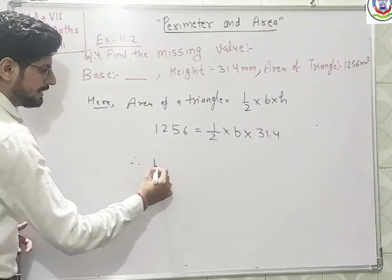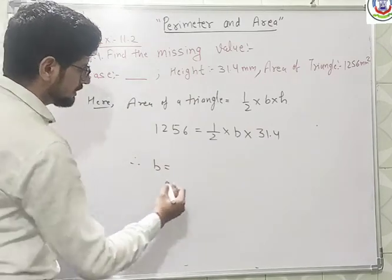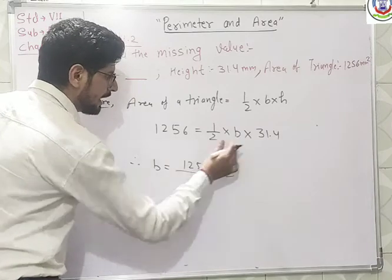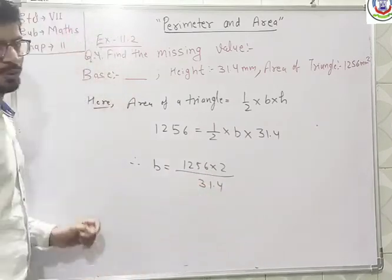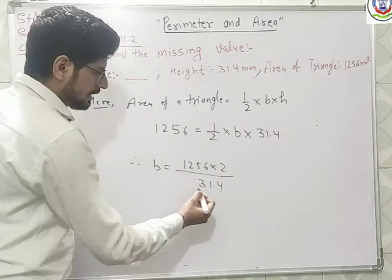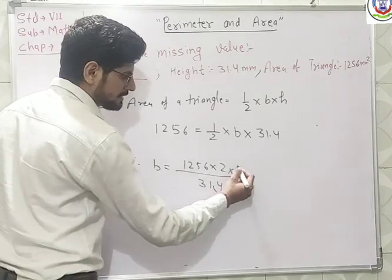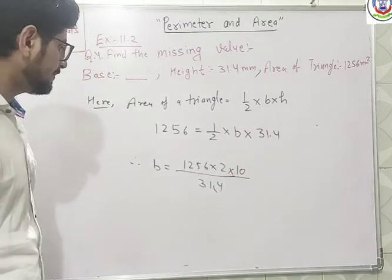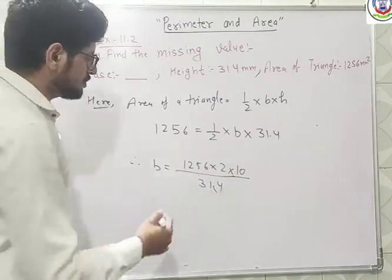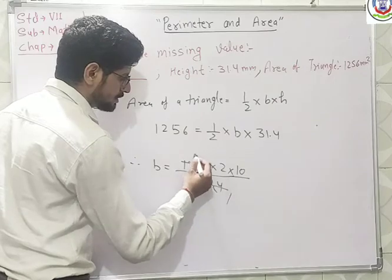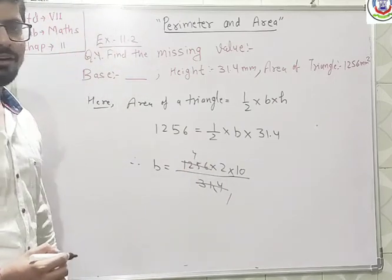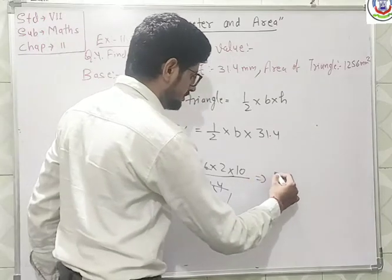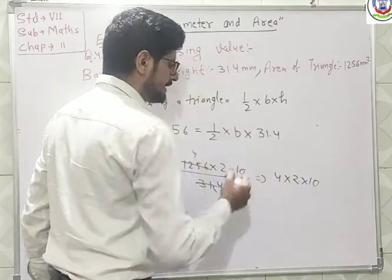Here we have to find B. B is equal to 1256 multiplied by 2 and divide by 31.4. After cancelling the decimal point, three one fours are 1256. So we are remaining with 4 multiplied by 2 multiplied by 10.